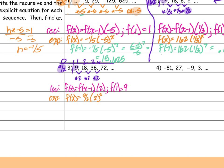Then I want to find f(7): (9/2) times 2 to the 7th power. In Desmos: 9 divided by 2, then times 2^7, which equals 576.